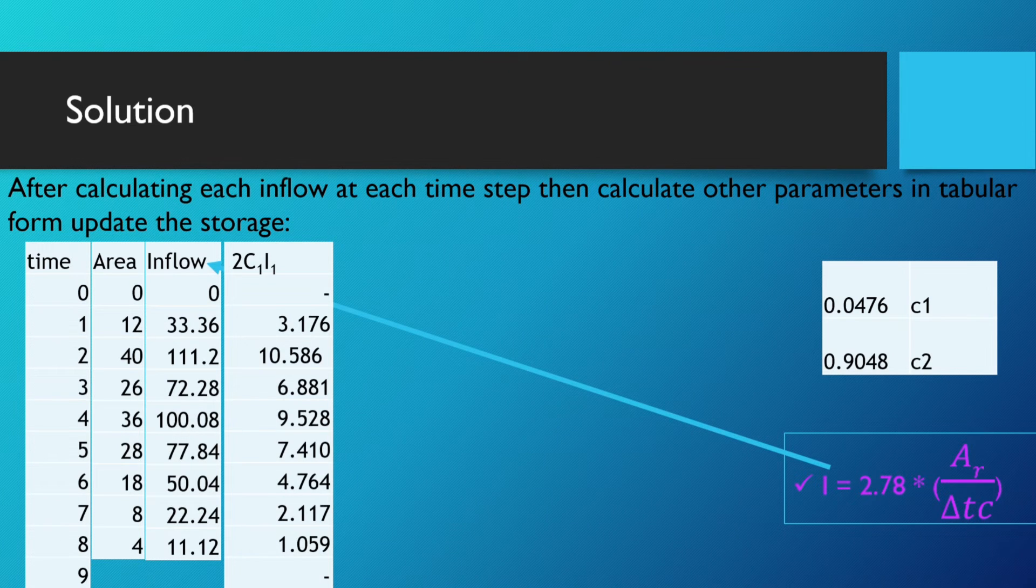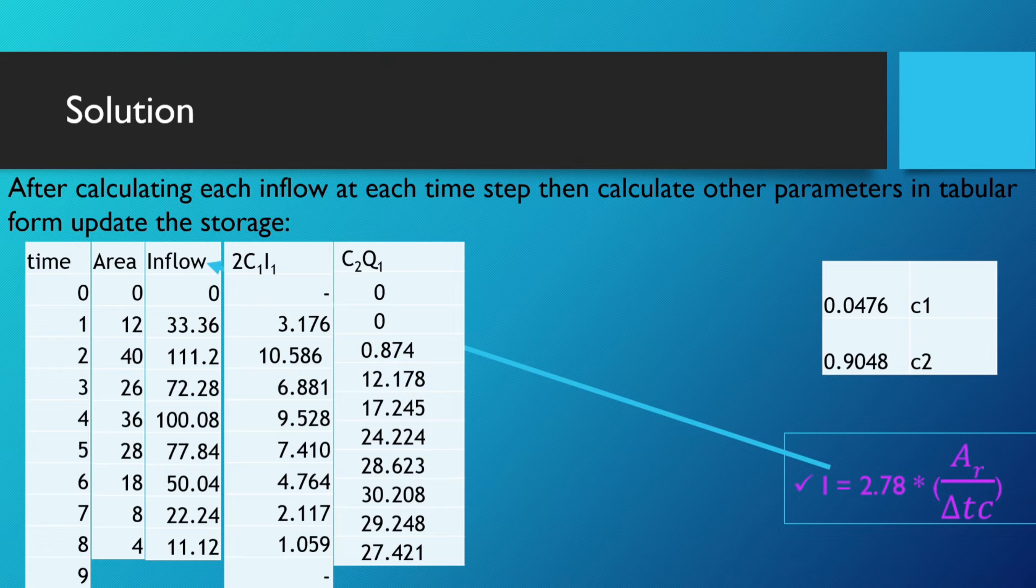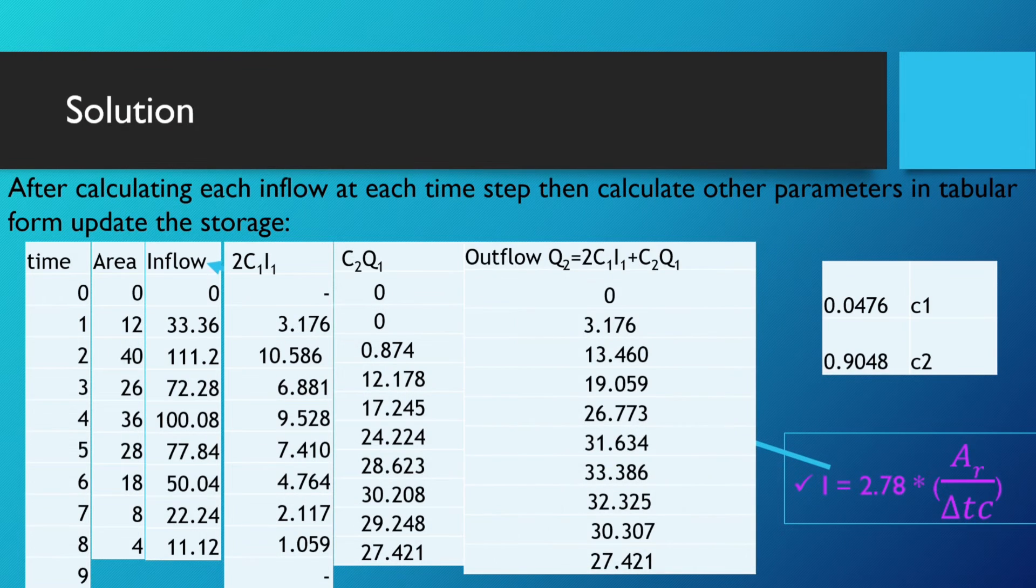After this, let's calculate C₂Q₁. Before calculating C₂Q₂, we have to calculate the outflows. Q₂ is equal to 2C₁I₁ plus C₂Q₁. The method of calculating the C₂Q₁ depends on this: the value of Q₂ is equal to Q₁, as represented here, but the value of the first row of Q will be placed for the considered Q₁ as the second row in C₂Q₁. In this method, you will calculate all the values of C₂Q₁. This shall be calculated until the final value of C₂Q₁ is equal to Q₂.